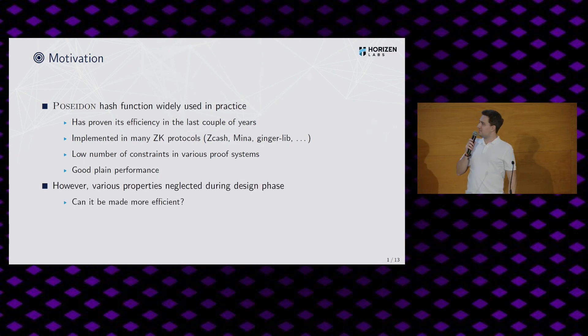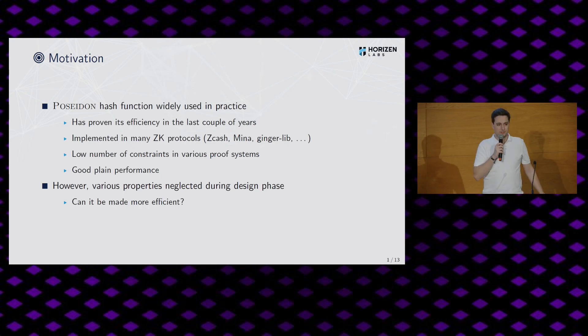However, when designing Poseidon, when we designed it like four or five years ago already, there were some things we completely ignored. So we just focused on rank one CS, rank one constraint systems, but we just completely ignored, for example, the plain performance or other proof systems. And in the last couple of years, we ask ourselves, how can we make it faster? Or can we even make it faster while still being very close to original design and maybe even just as secure as the original design?